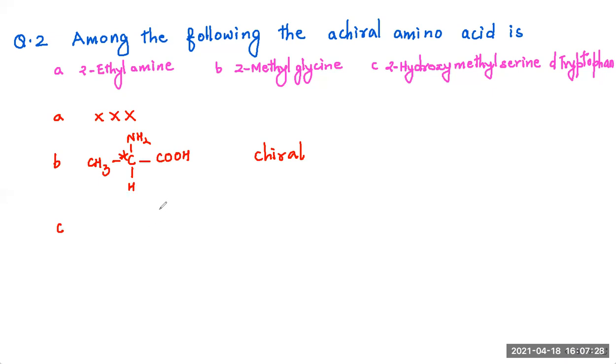2-hydroxymethyl serine will be - do you remember? Which is NH2, COOH, CH2OH, and hydroxymethyl CH2OH. Now see, this group and this group is same, symmetrical. So this is achiral.